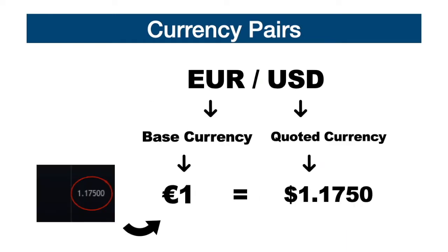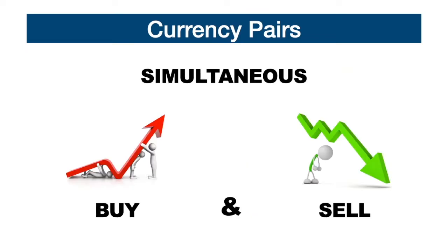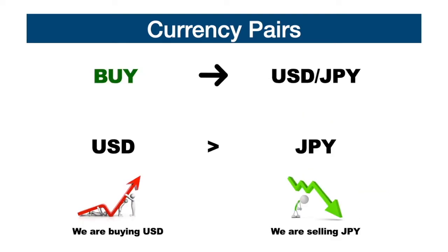Let's take as an example the currency pair euro-US dollar at the price of 1.1750. The euro is the base currency while the dollar is the quoted currency. If the price on the chart is 1.1750, it means that one euro will cost 1.1750 dollars. The Japanese yen is the only currency that is always quoted. Trading in the forex market is the simultaneous buying of one currency and the selling of the other. When buying dollar-yen, you are automatically buying the dollar and selling the yen. Your analysis should indicate that the yen is weak against the dollar, with strong confluences showing that the dollar is stronger than the yen.